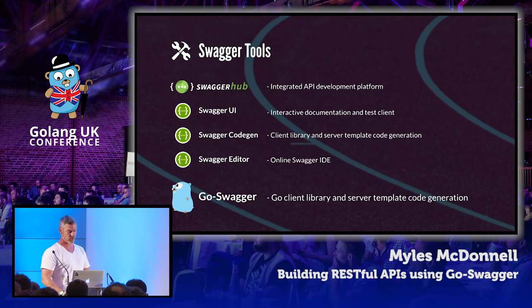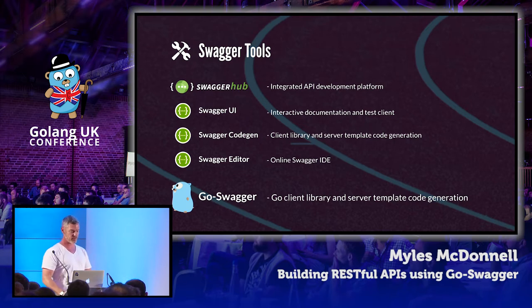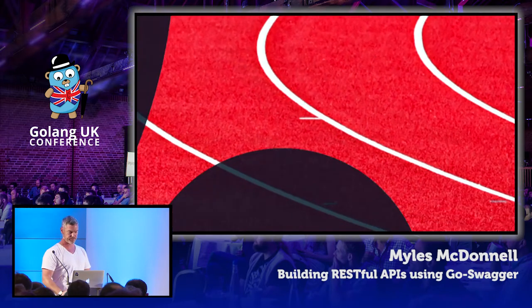Swagger Hub is a commercial product which is an aggregate of the other tools we've mentioned — the UI, the code gen, and the editor. And Go-Swagger sits outside of that as an open source project for client library and server template generation.